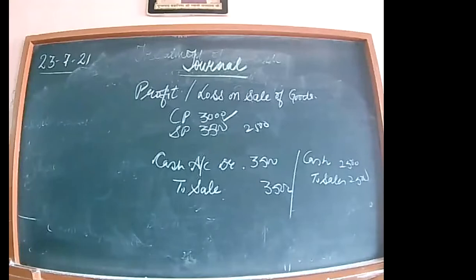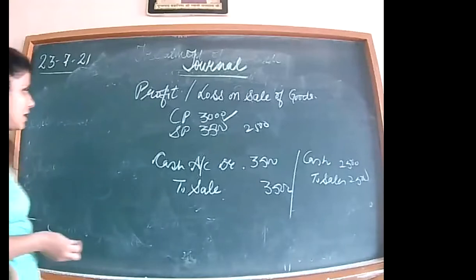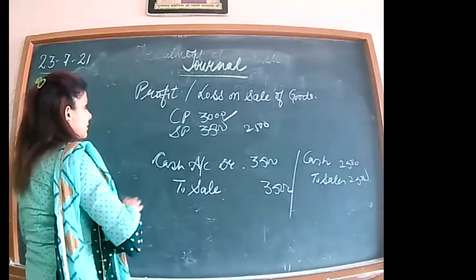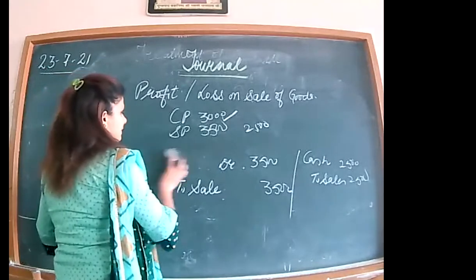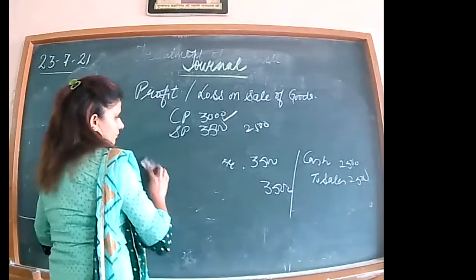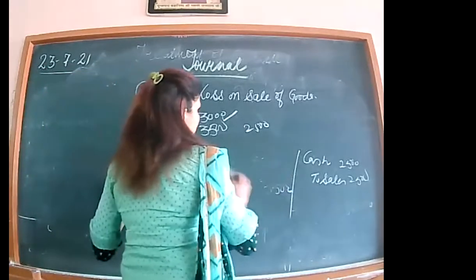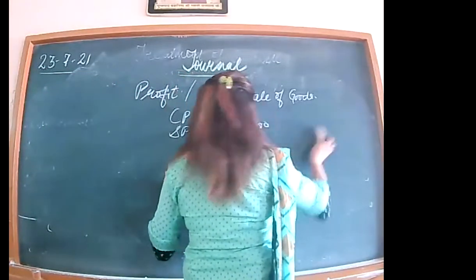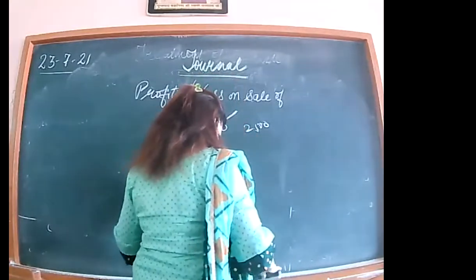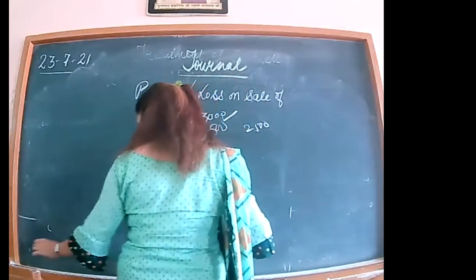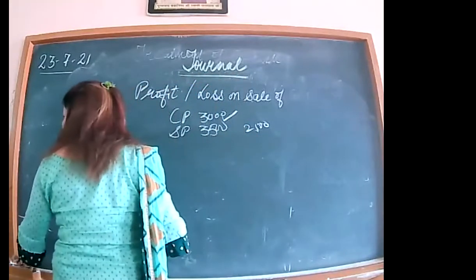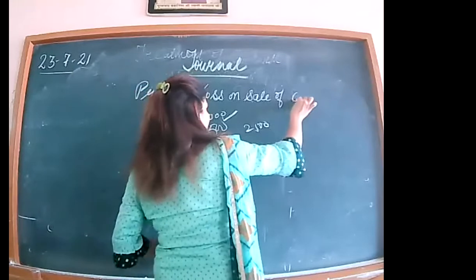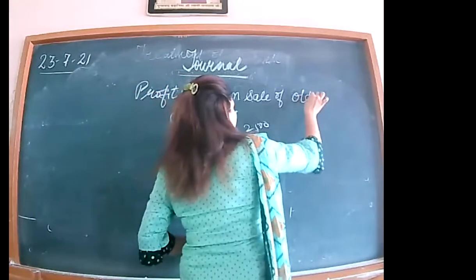But had I been selling old assets at profit or loss, then that profit or loss I will be showing in my journal entry. So this is what profit or loss on the sale of old assets.